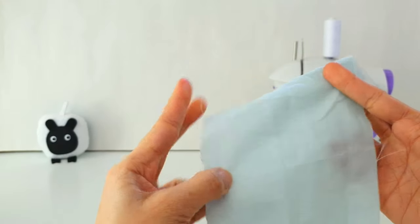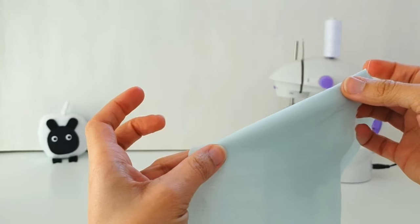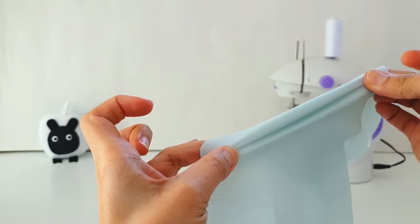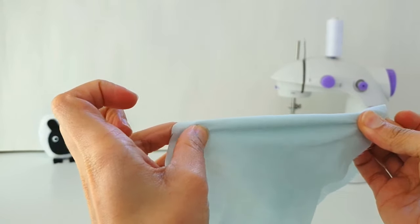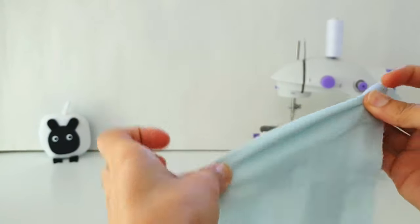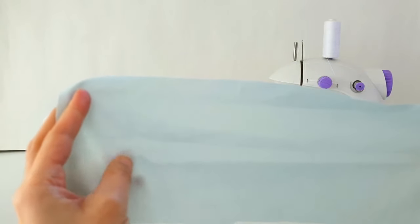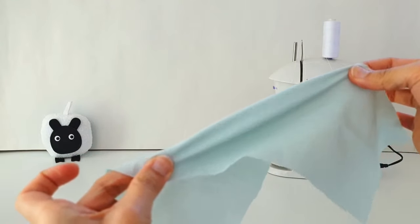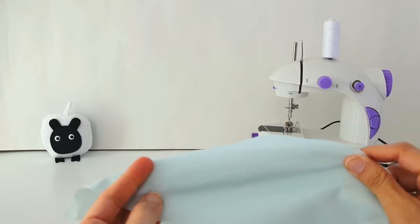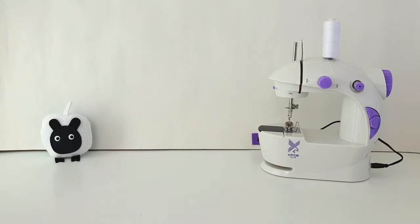But now look what happens if I stretch it diagonally on the bias. Do you see? The fabric is behaving in an elastic manner. So on the diagonal, woven fabrics behave in a stretchy way as well. And we are going to use this quality to our advantage when we are setting the thread tension on our Mini Sewing Machine. Let's go ahead and do that.